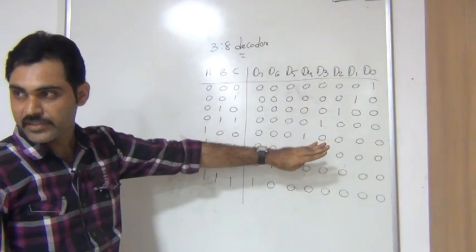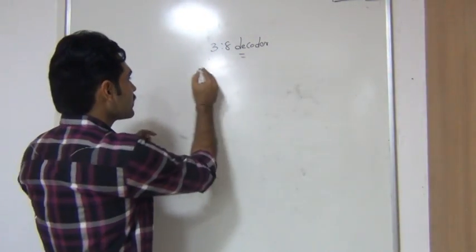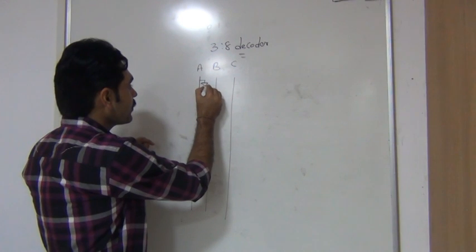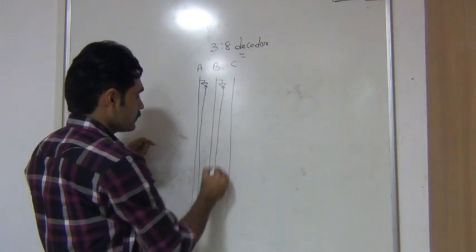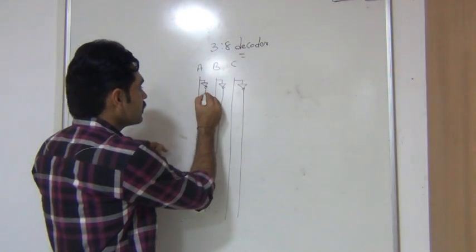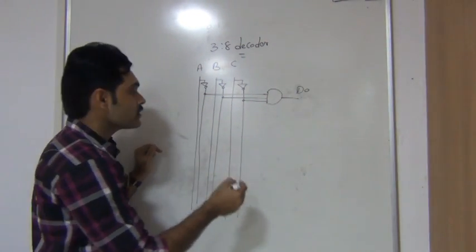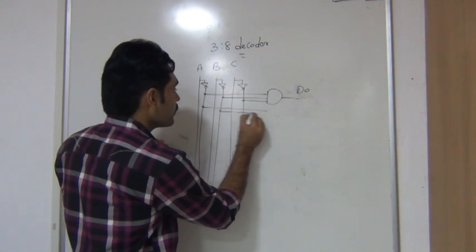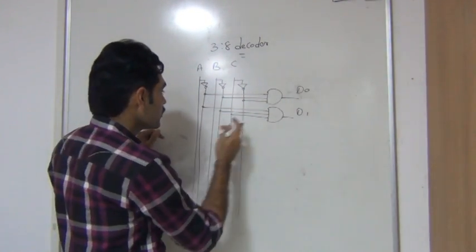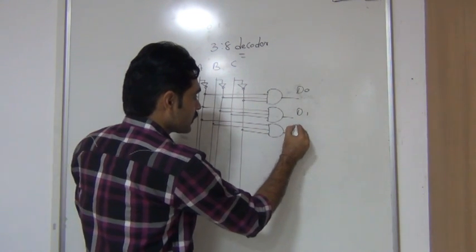Now we will construct the circuit for the 3-to-8 decoder. To construct the circuit, we require 3 inputs A, B, C and we require A-bar, B-bar, C-bar also. For the first case 000, we connect A-bar, B-bar, C-bar to an AND gate - this output is D0. For case 001, we connect A-bar, B-bar, C to an AND gate giving D1. For case 010, we connect A-bar, B, C-bar giving D2.